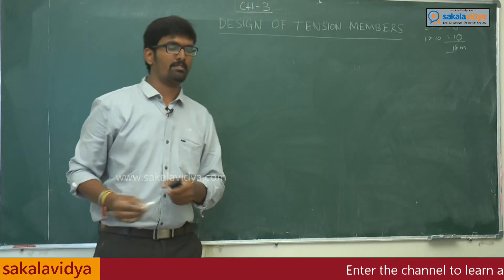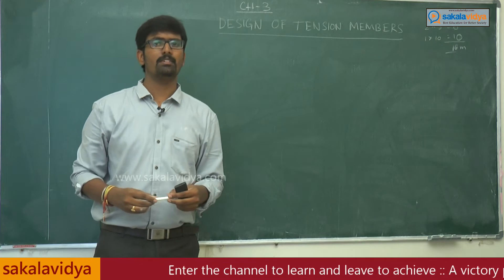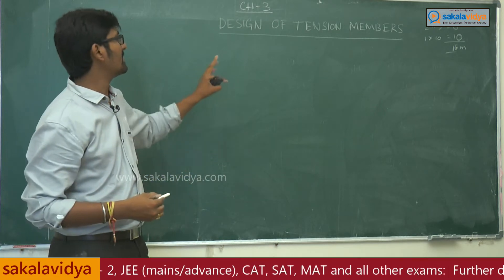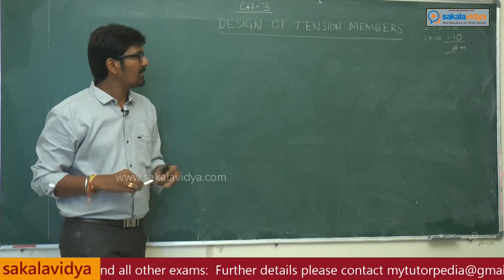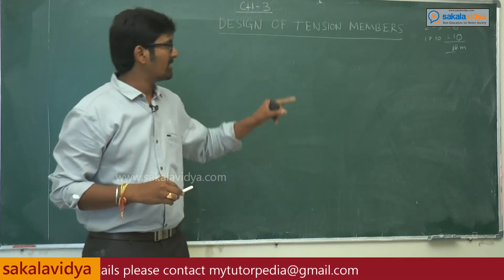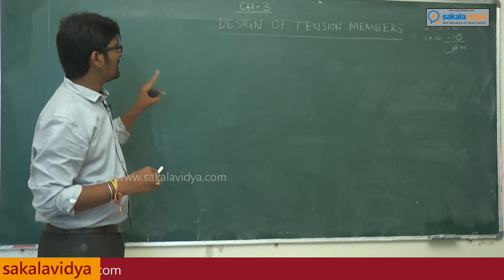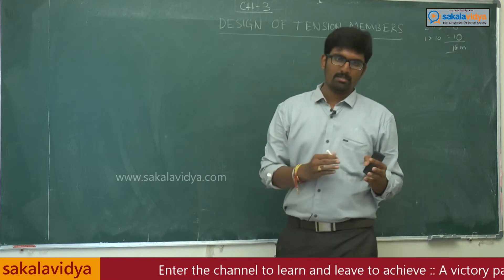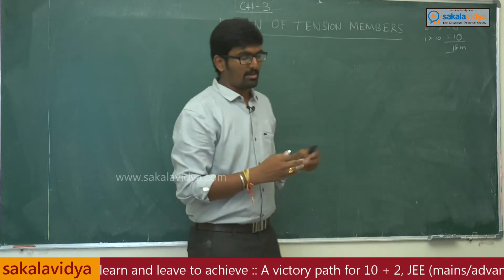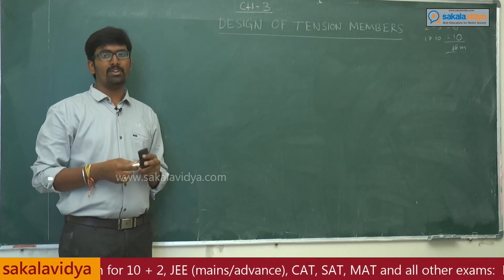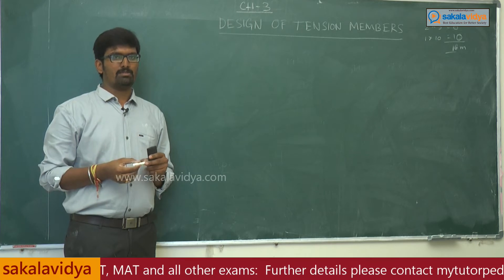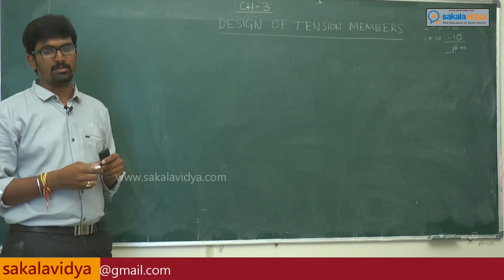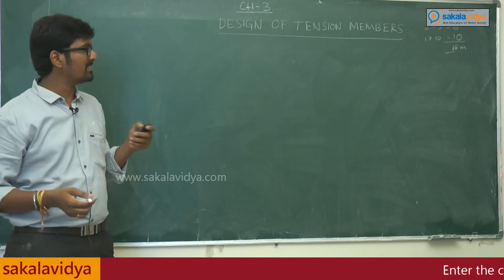Welcome back to cycle video.com. In our previous sessions we completed the first and second chapters. In this section we are going to start Chapter 3 — Design of Tension Members. As per your diploma syllabus, there are two short answers for six marks and one long answer for ten marks, giving a total weightage of 16 marks. These chapters are useful not only for diploma/polytechnic but also as a foundation for B-Tech and M-Tech level.